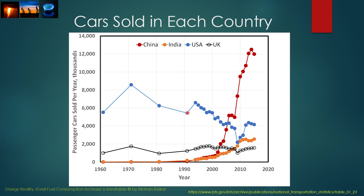The same is true with cars sold. As more roads are built and infrastructure is created, more people are going to buy cars. You can see the growth of personal cars sold in China has increased very rapidly. In India, the rate is not as high but the trend is the same — the rate at which people are buying cars continues to increase. Contrast that with the United States, where the number of cars sold continues to decline, and in the United Kingdom, where the number has remained fairly constant.